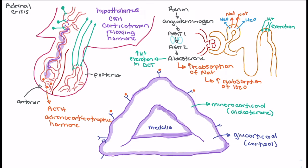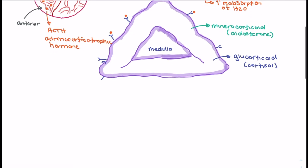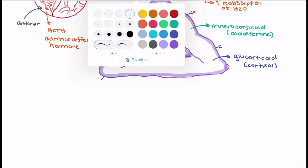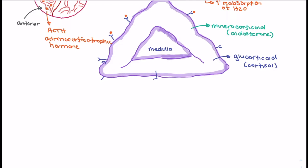That's what we're going to talk about with someone experiencing Addison's disease. Looking at the adrenal cortex, we can discuss the function of cortisol, which has a number of different functions. Cortisol acts as a counter-regulatory hormone, playing a role in increasing blood glucose levels. It responds when blood glucose levels are low, essentially assisting in increasing blood glucose through several mechanisms.